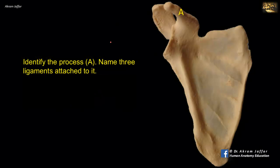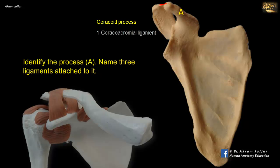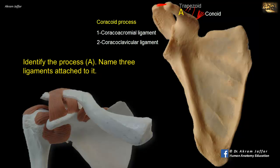Identify process A and name three ligaments attached to it. A is the coracoid process, and it gives attachment to the coracoacromial ligament between the coracoid and the acromion, forming the coracoacromial arch. It also gives attachment to the coracoclavicular ligament in its two parts: the conoid ligament and the trapezoid ligament. The third ligament is the coracohumeral ligament, which merges with the capsule of the shoulder joint and is considered an extrinsic ligament. Three muscles are also attached to the coracoid process: biceps, coracobrachialis, and pectoralis minor.